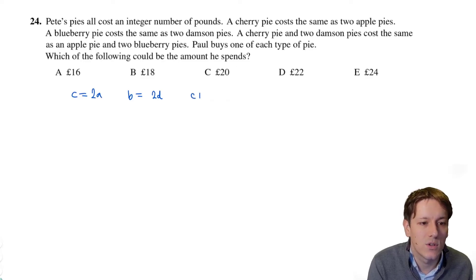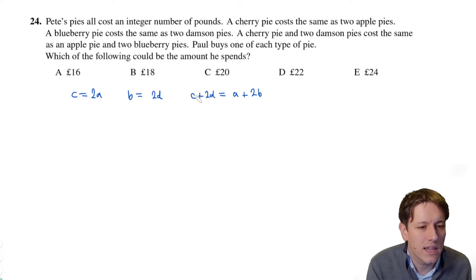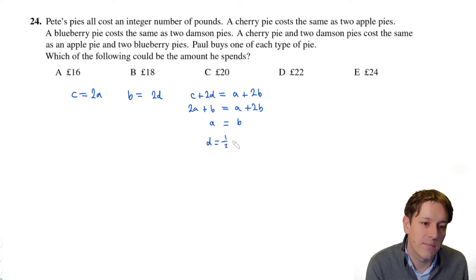A cherry pie and two damson pies cost the same as an apple pie and two blueberry pies. So given we've got this, let's substitute these first two into here, so C is 2A and then B is 2D. So I've got 2A plus 2D equals A plus 2 times 2D. And then if I subtract A and subtract B from each side, we get that A must equal B. Now once we know that, we actually know the ratio of all of the different pies. So I've got A is the same as B and then B is 2 lots of D, so D is a half of A and B, and C is 2 lots of A and B.